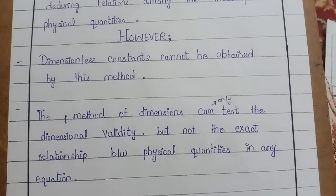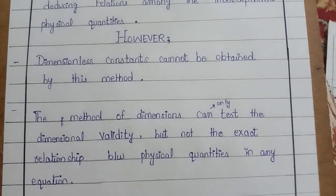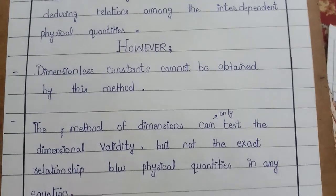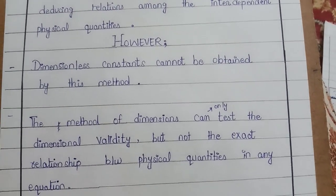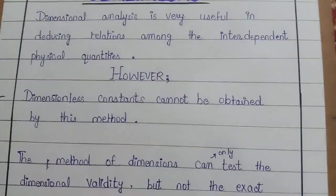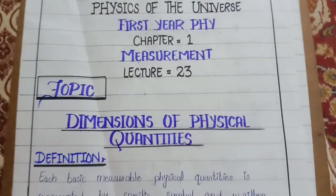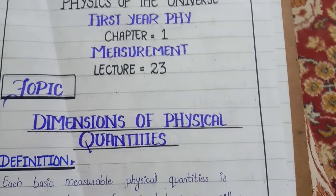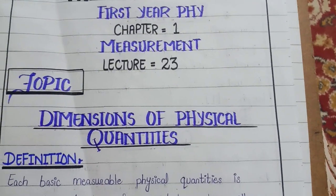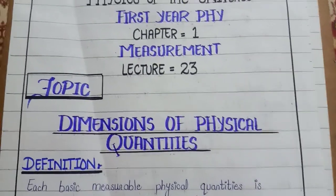So that's all for today's lecture on dimensions of physical quantities. We covered what dimensions are, their notation, how to represent them, their significance, the terms used with dimensions, and the advantages and limitations of dimensional analysis. Inshallah, we will meet in the next lecture where we will do examples. Till then, Allah Hafiz.